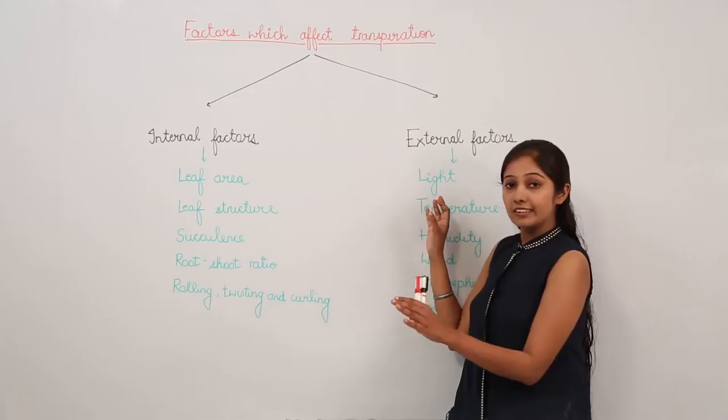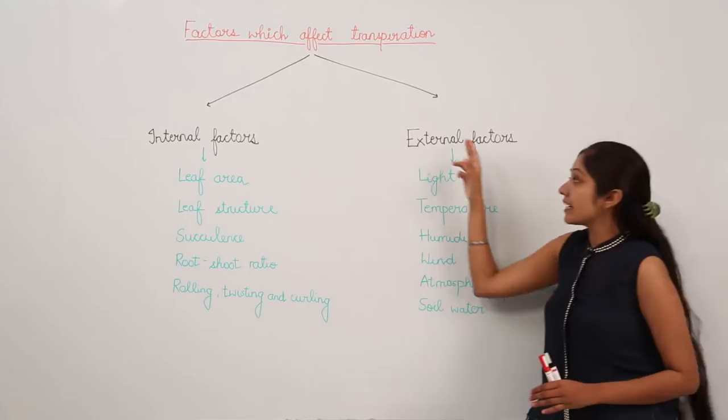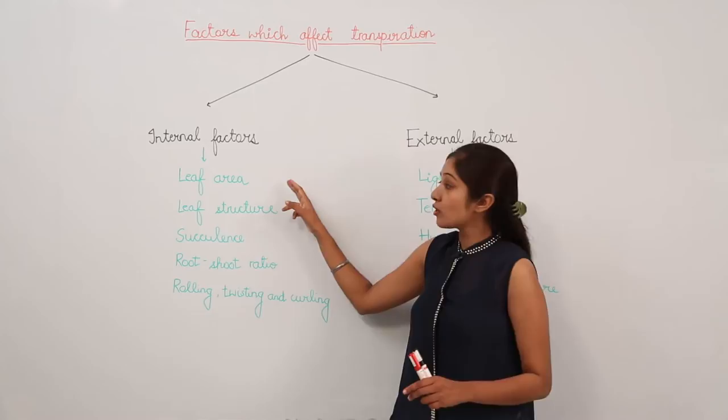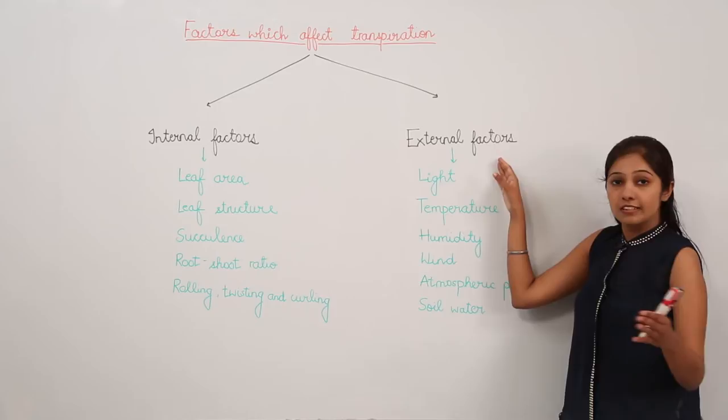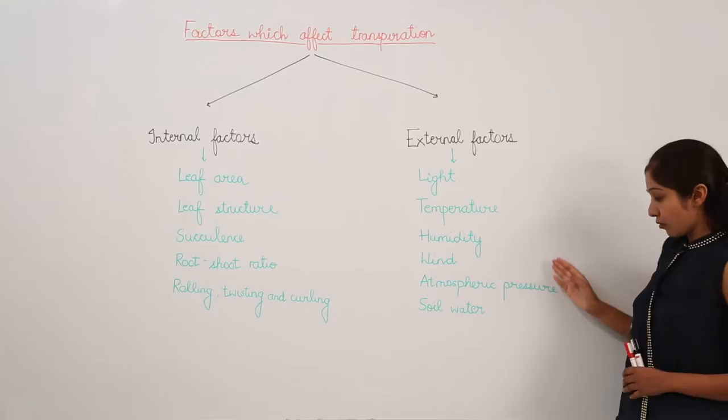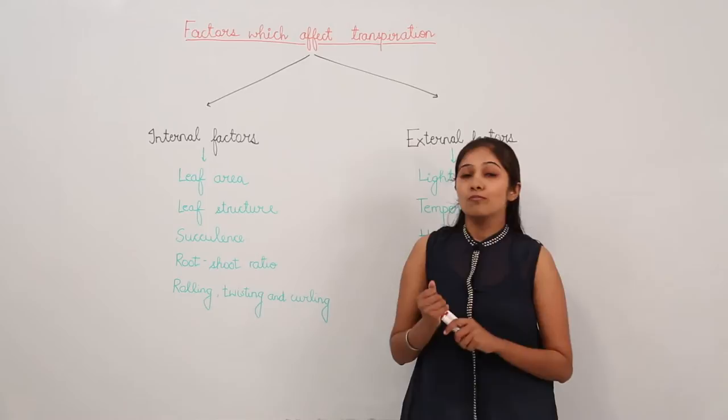I have divided these factors broadly into two categories: internal factors and external factors. In internal factors, we will study the effect of leaf area, leaf structure, succulence, root-shoot ratio, rolling, twisting, and curling on the rate of transpiration. In external factors, we will study the effect of light, temperature, humidity, wind, atmospheric pressure, and soil water on the rate of transpiration.